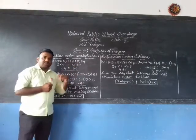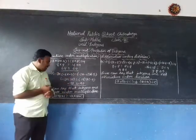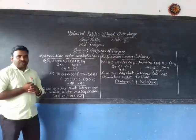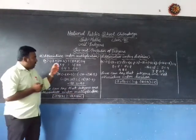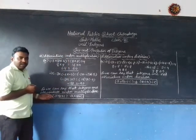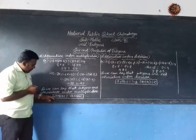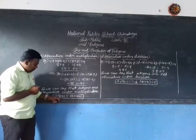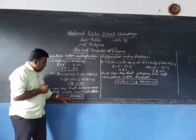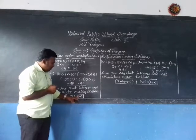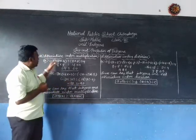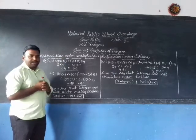The results are the same. From these two examples, we can say that integers are associative under multiplication. This can be written as: A × (B × C) = (A × B) × C.